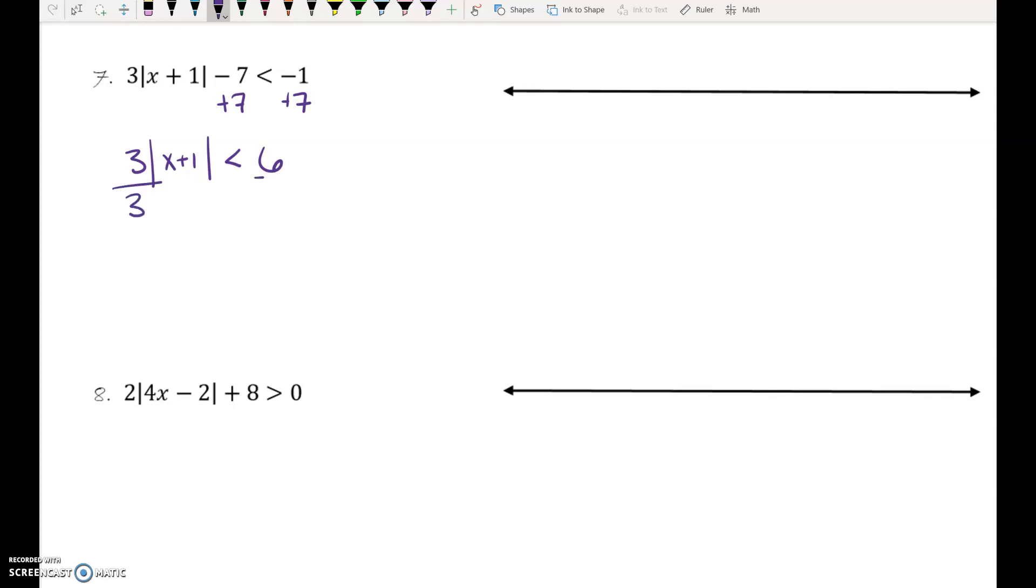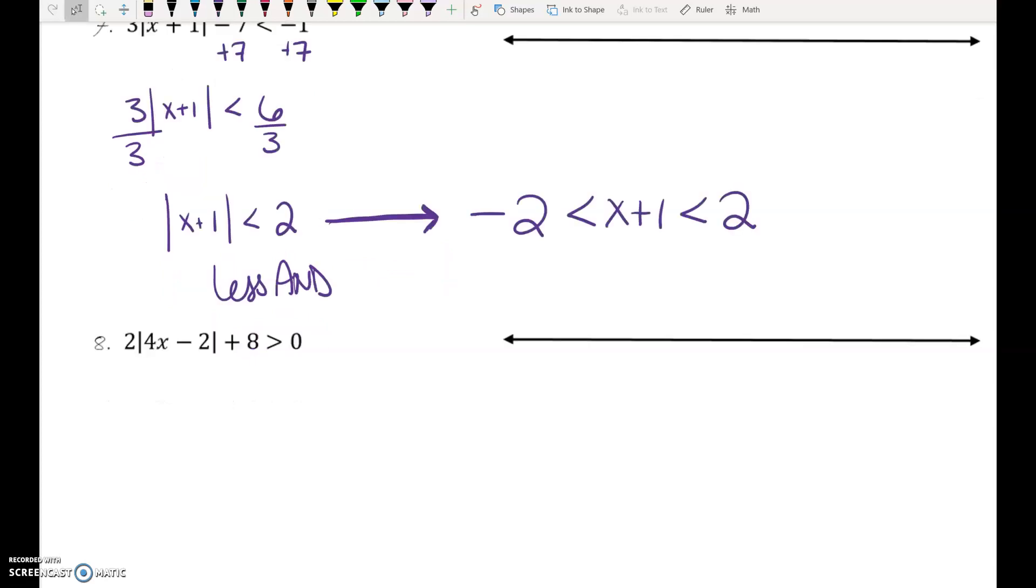What do we do with this 3 in front of the absolute value bars? Divide. You cannot distribute into absolute value. You have to divide. This is a less and. Take a moment. See if you can set this up correctly to solve. You should get this and inequality that you would then solve and graph if you were doing the problem fully.